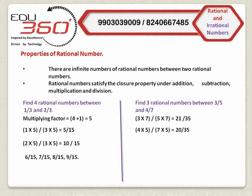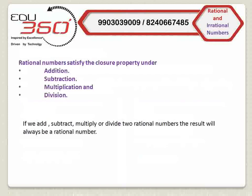Now, you can solve this problem. I want to give you this as an assignment. In this section, we will discuss the second property of rational numbers, which is that rational numbers satisfy the closure property under addition, subtraction, multiplication, and division. It means that if we add, subtract, multiply, and divide two rational numbers, the result will always be a rational number. You can check this property with any two rational numbers.